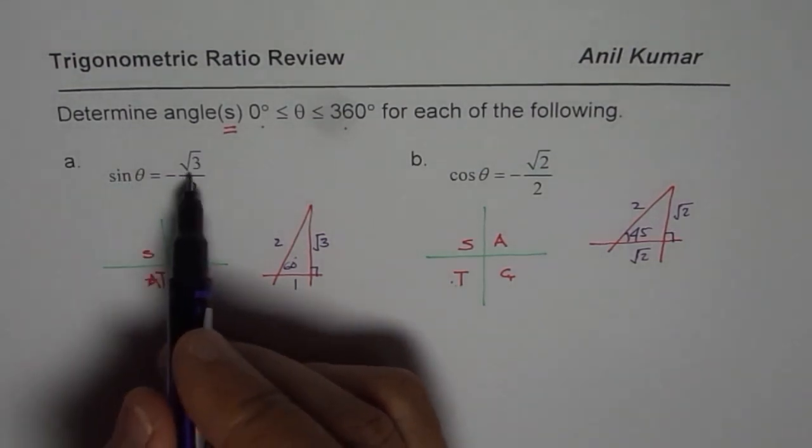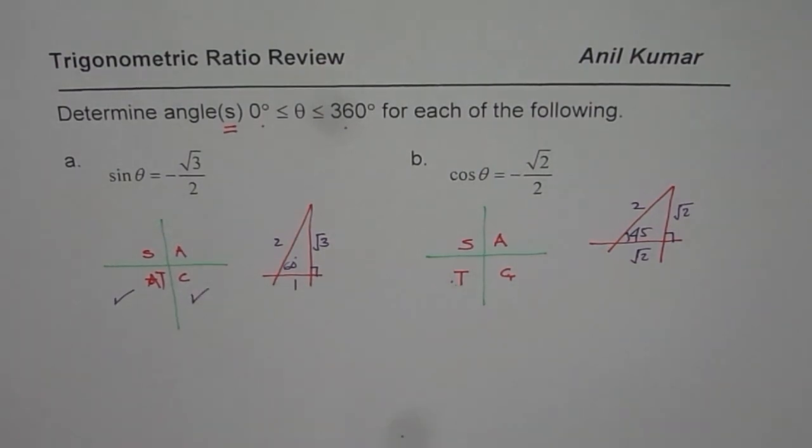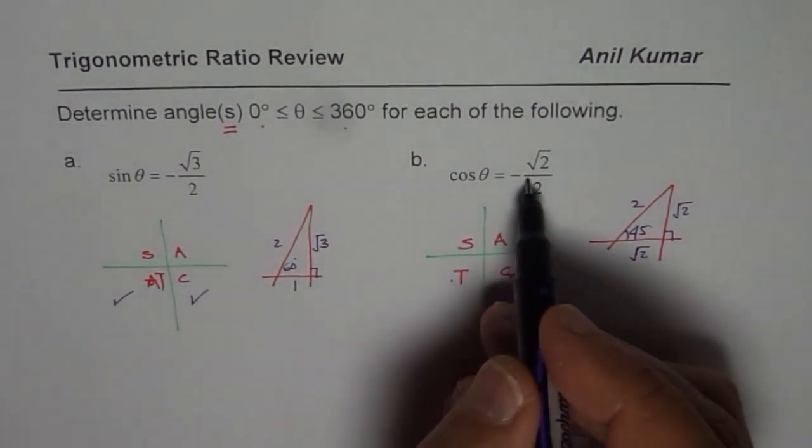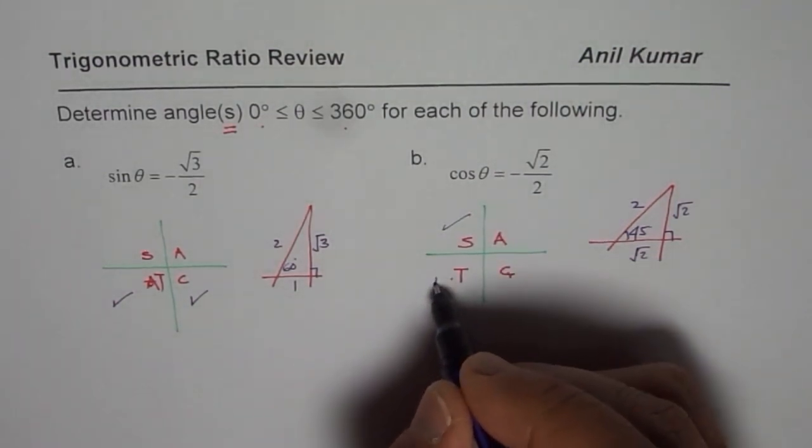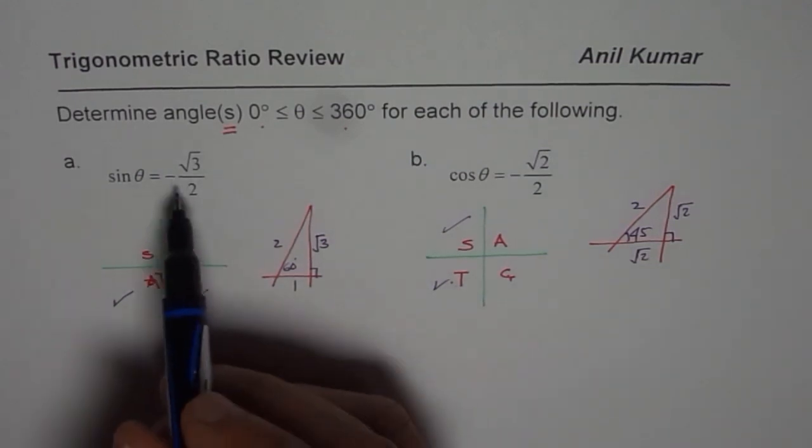Now, sine is negative. Sine negative means we are either in quadrant 3 or quadrant 4. Cosine is negative means you are in quadrant 2 or quadrant 3. Now what we need to figure out is the angle itself.